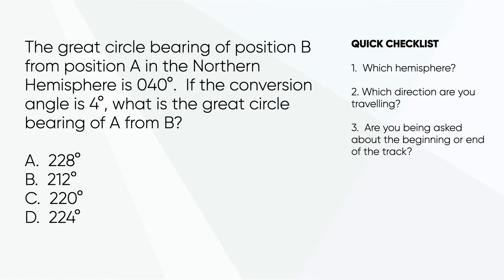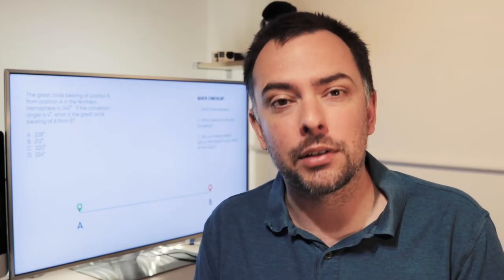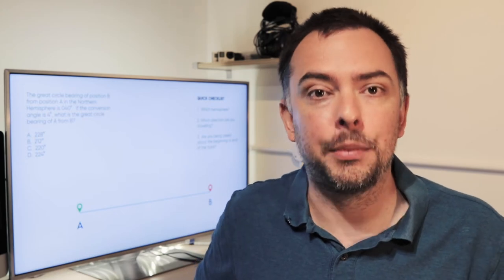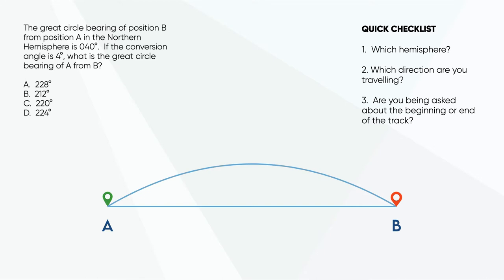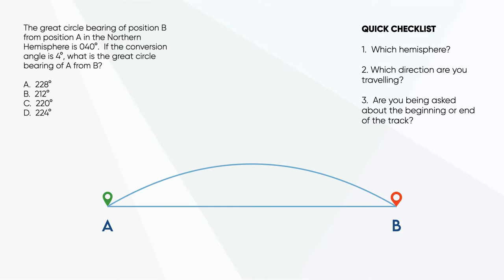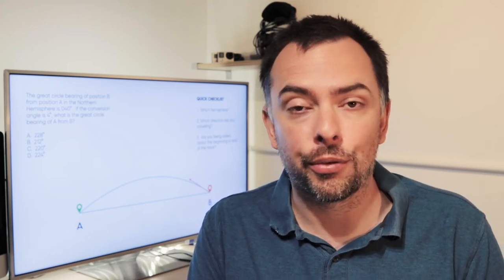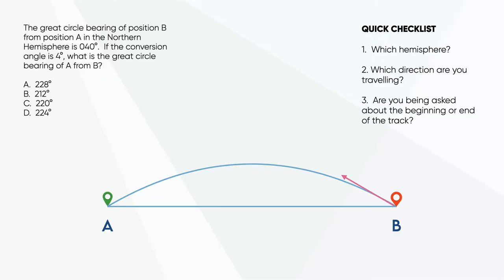This exam question says: the great circle bearing of position B from position A in the Northern Hemisphere is 040 degrees. If the conversion angle is 4 degrees, what is the great circle bearing of A from B? Let's start by drawing the rhumb line track between these two positions and go through the checklist. Which hemisphere are we in? Very clearly we're in the Northern Hemisphere, so our great circle track is going to curve upwards. Secondly, which direction are we travelling? Read the question twice — they've given us the great circle bearing of B from A, but what they're asking us about is the great circle bearing of A from B. So this time we're travelling westbound. And thirdly, are we being asked about the beginning or the end of the track? They're asking us for the initial great circle bearing to get from B to position A, so we're being asked about the beginning of our track.